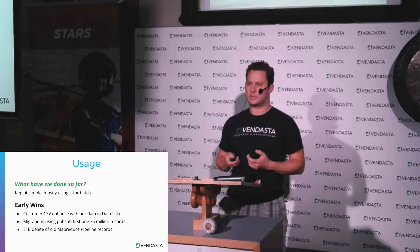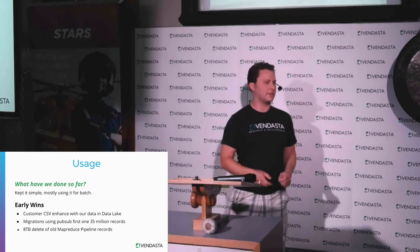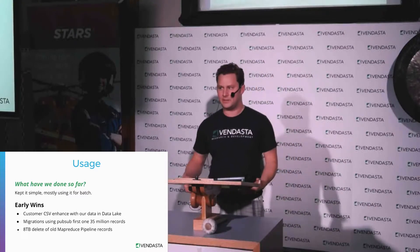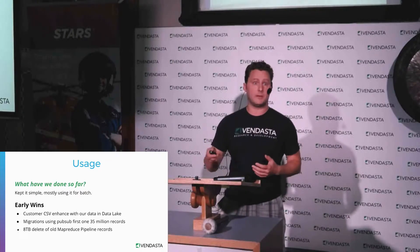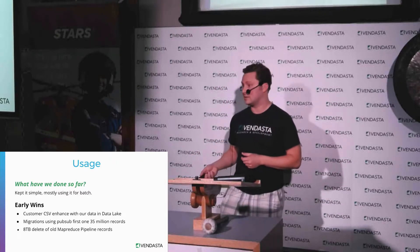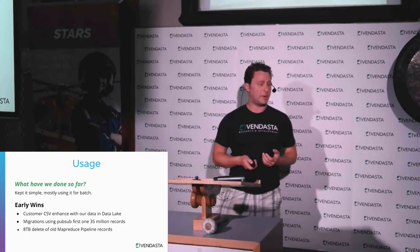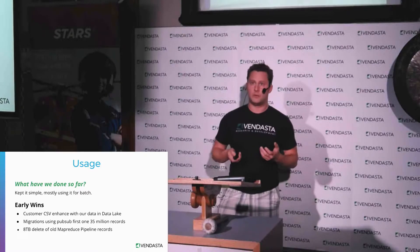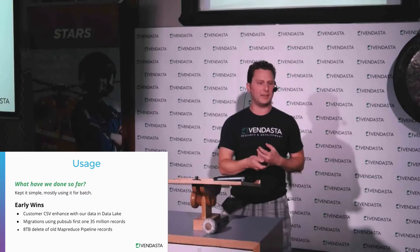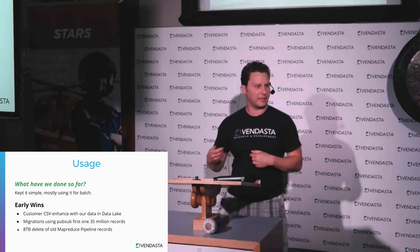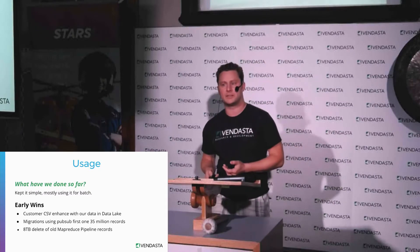Next, a team started working on a project, defined their data structure, got 35 million records in, then decided the structure wasn't quite right — early days, you're not always sure how to structure things. So we took those 35 million records, pub-subbed them out, and the team did the updates on all 35 million records. Lastly, in our last hackathon, Cody Kerr and Dale Birch — remember those map-reduce pipelines that stored a lot of extra data in Datastore? It turned out there were eight terabytes of that data. Previously it was more expensive to delete it than to keep it, but the math has changed. With a dataflow we went through all of it and deleted eight terabytes — a good win for us.